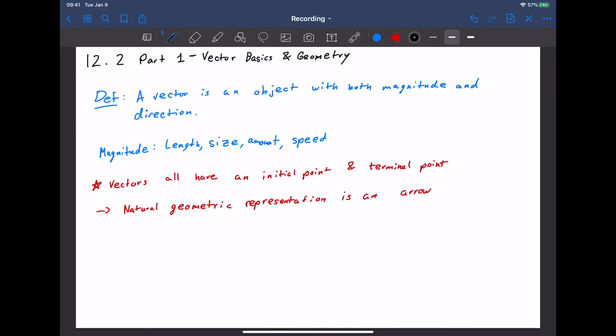For example, we would have some sort of initial point A, some sort of final point B, but again, these vectors have a direction to them. It matters we're going from A to B. So you need to put arrows on your vector.